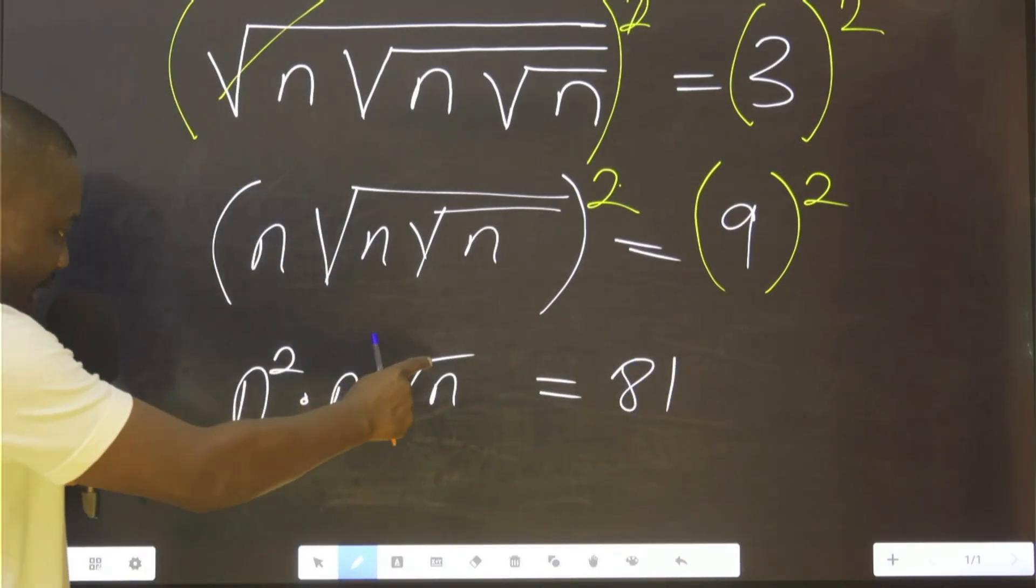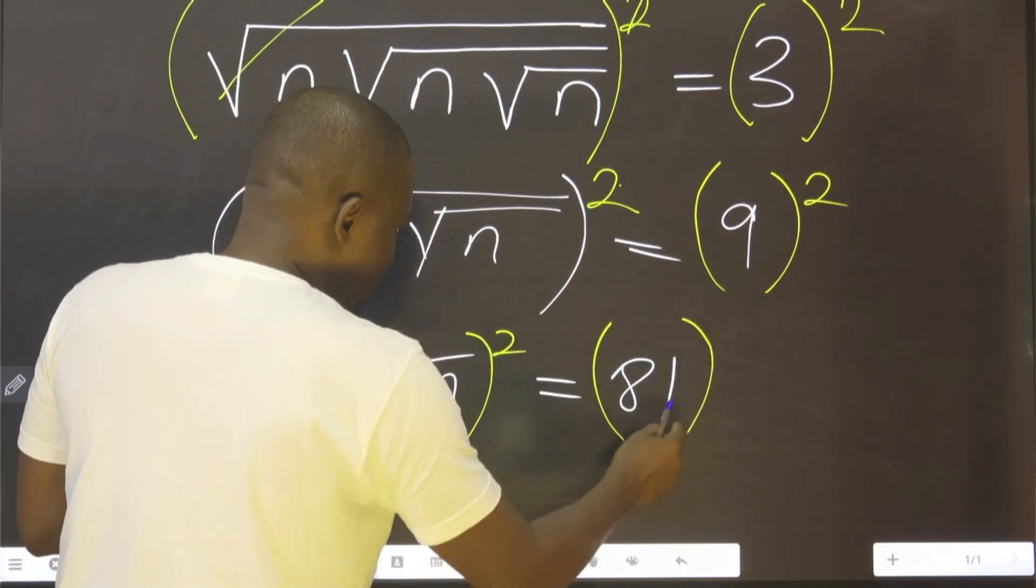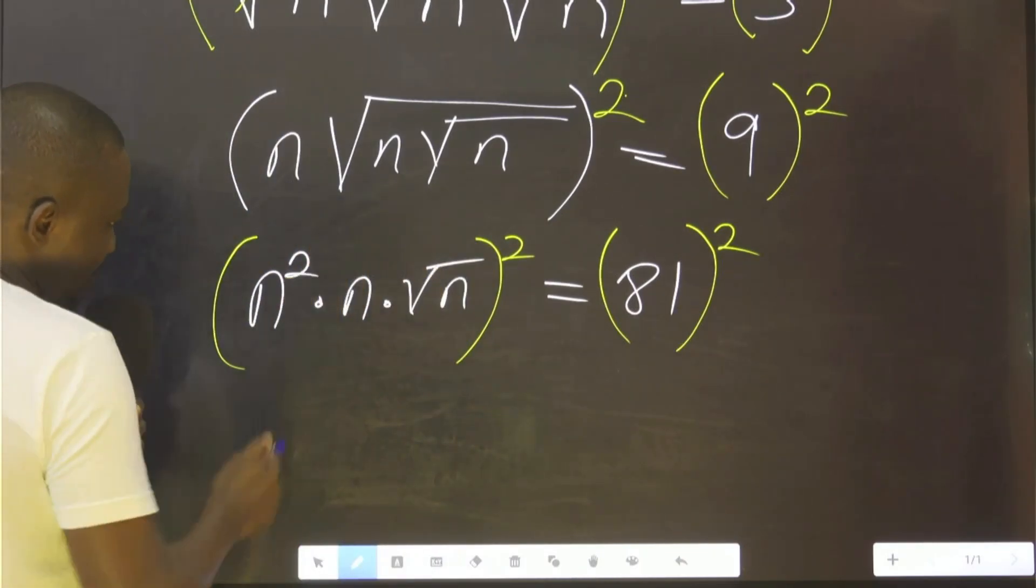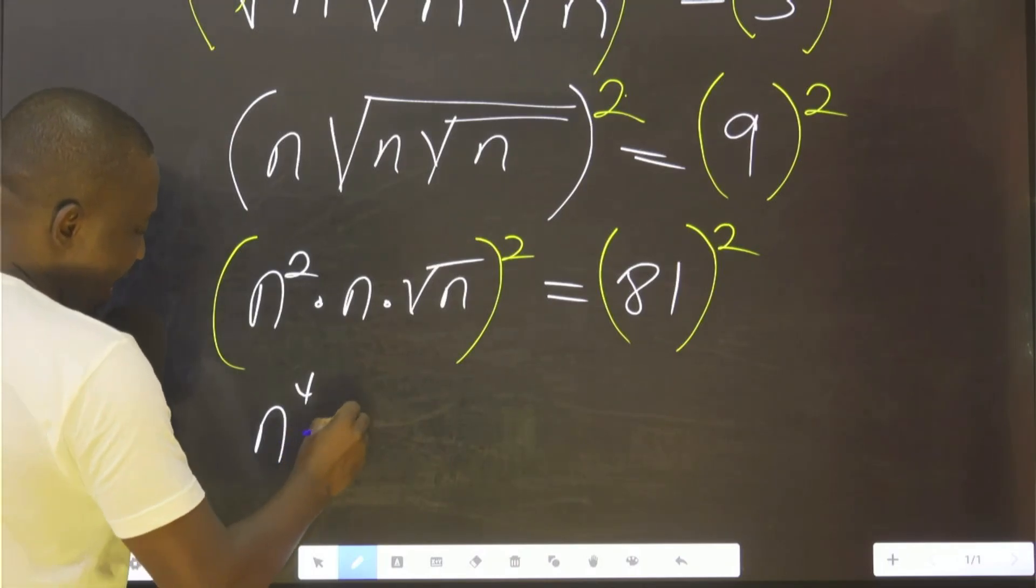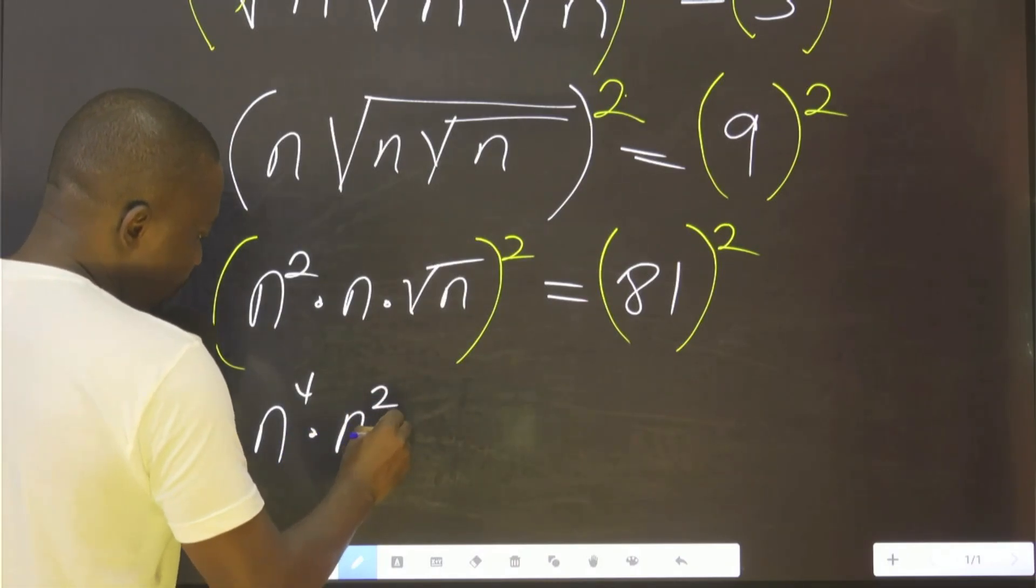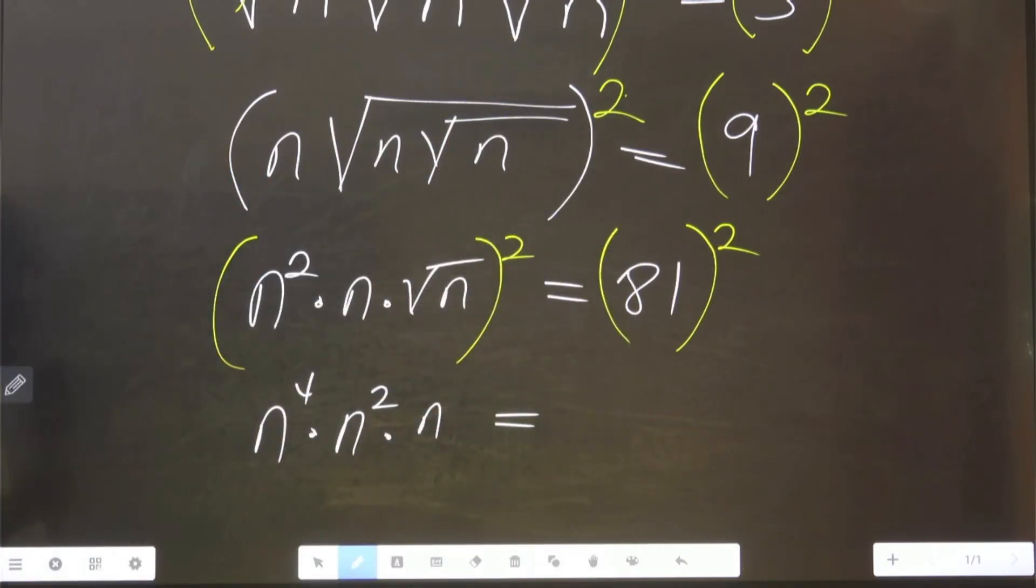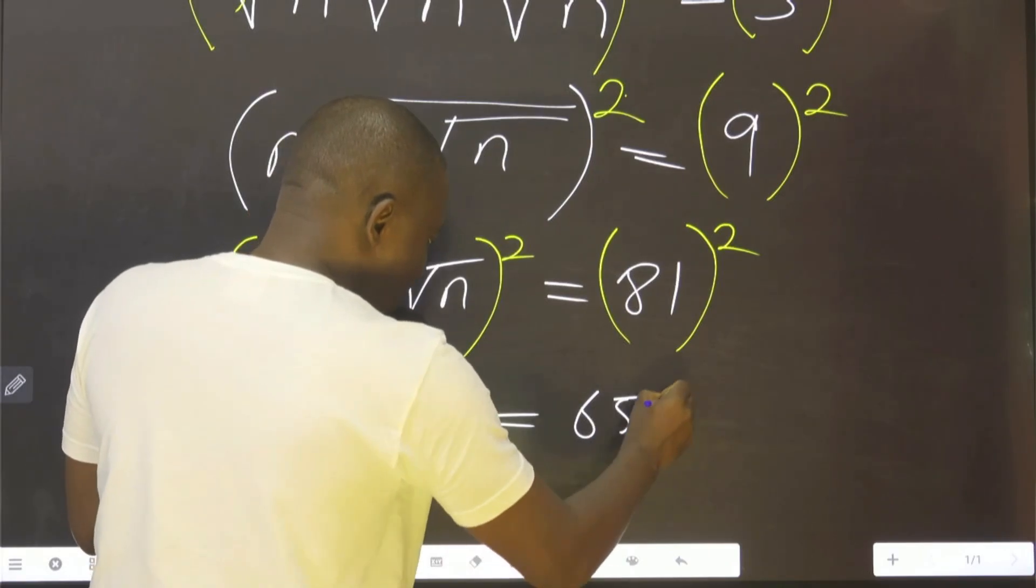Because of this one I see here, we square both sides, so that this guy can disappear. So this and this will come together to form 4, that's 2 multiplied by 2, multiplied by n raised to the power 2, multiplied by n, which equals to 81 raised to the power 2. 81 raised to the power 2 is equal to what? This will give us 6561.